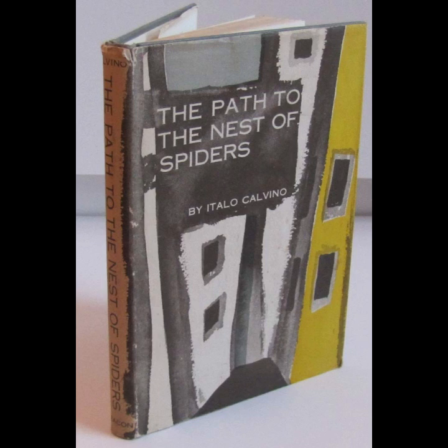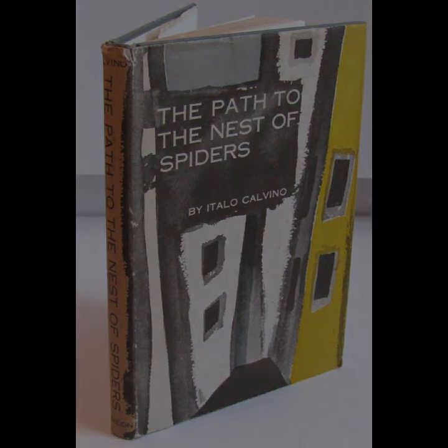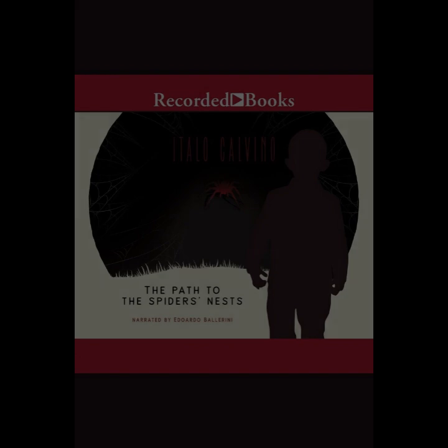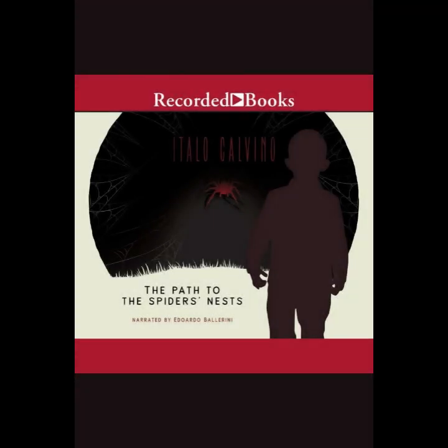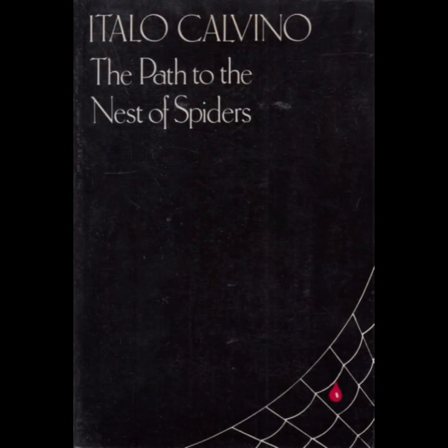The narrative is marked by its vivid descriptions of the Italian landscape and the stark contrast between the natural beauty of the setting and the brutal reality of war. Calvino's descriptive prowess brings to life the countryside, which serves as both a refuge and a battleground for Pin. The natural world is depicted with a lushness that contrasts sharply with the desolation brought about by the conflict, highlighting the sense of loss and displacement experienced by the characters.